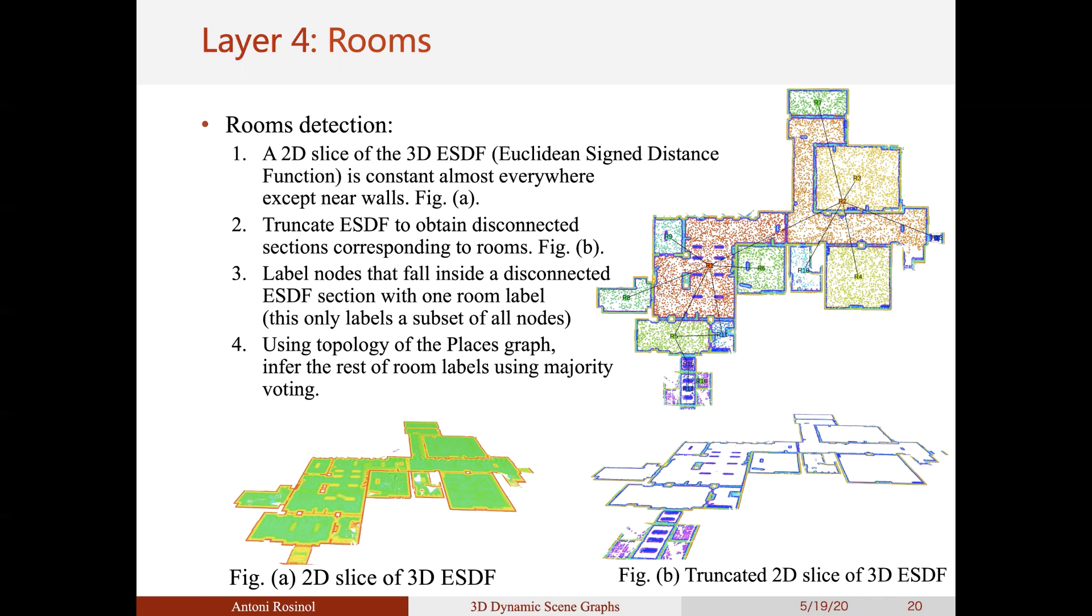Then, as can be seen in the top right figure, we add a label to each 3D place falling inside an ESDF room and then use the topology of the layer 3 to propagate the labels to nearby nodes. It then becomes also trivial to connect rooms together and infer the door positions by just looking at which edges connect places in different rooms.